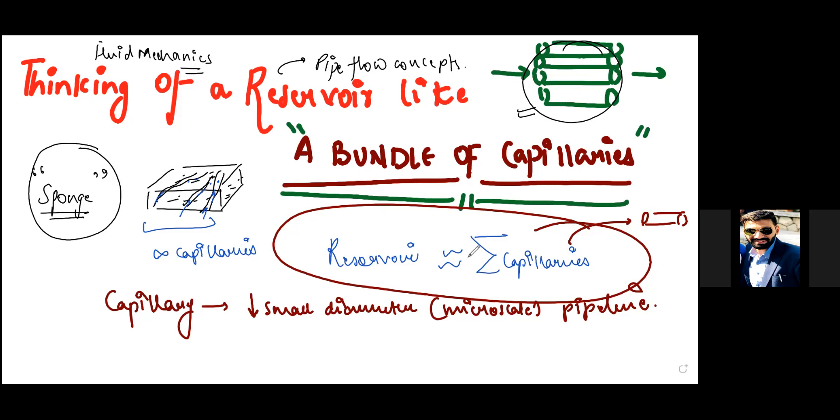This is good enough for motivating the starting video on what we are going to discuss. The equation that we'll be deriving in this will be called Hagen—I hope I'm pronouncing it right—Poiseuille's equation. This is the equation that we will be deriving in the coming sessions.